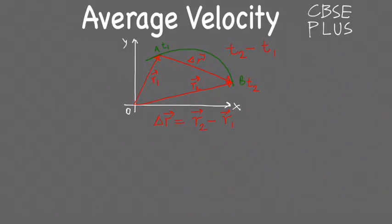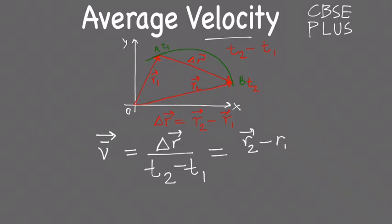Now coming back to the average velocity. Average velocity is written as a bar over V. It is a vector quantity because it is velocity, which is the average of the velocity from point A to B. It will be the total displacement - the displacement of the particle from A to B, which is delta R - divided by the total time taken, which is T2 minus T1. This can also be written as R2 minus R1 by T2 minus T1. So this is the average velocity.